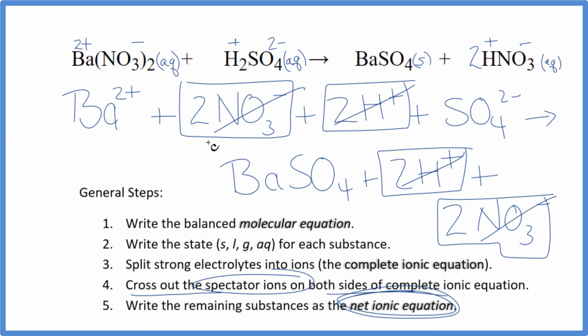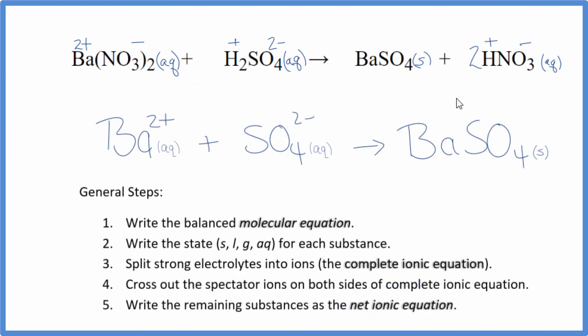I'll clean it up, write the states. We'll have our net ionic equation. So this is the balanced net ionic equation. Note that charge is conserved. We have 2+ and 2-, so that gives us a net charge of 0 here, and this is a neutral compound net charge of 0. Also note that the atoms are balanced as well.